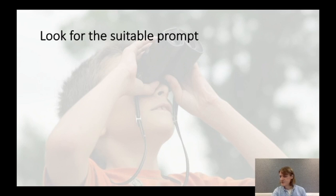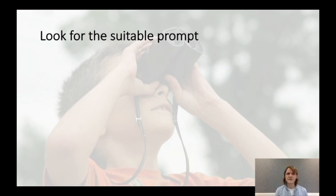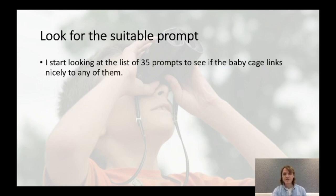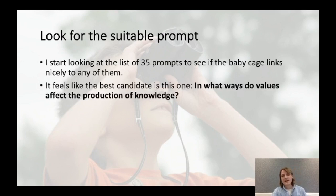So that's my first object. I kind of like it — it's interesting, it has context, it's unusual. I will use it as the first object in my TOK exhibition. Now I need to look for the suitable prompt using my bottom-up approach. Looking at the list of 35 prompts to see if the baby cage links nicely to any of them, it feels like the best candidate is: 'In what ways do values affect the production of knowledge?'